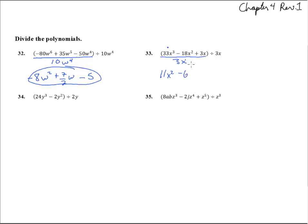Minus 18 divided by 3 is 6, x squared over x leaves an x there, and 3x over 3x is 1.